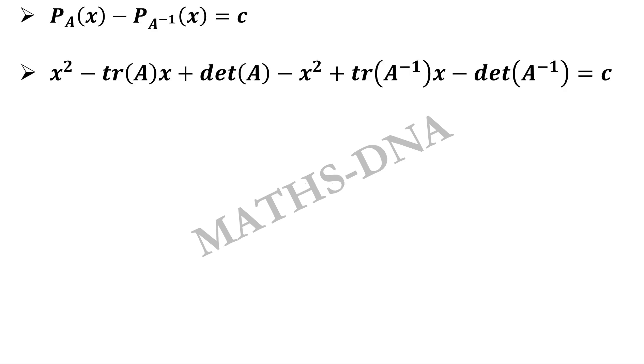We get x² minus tr(A)x plus det(A) minus x² plus tr(A^-1)x minus det(A^-1) equals to c.